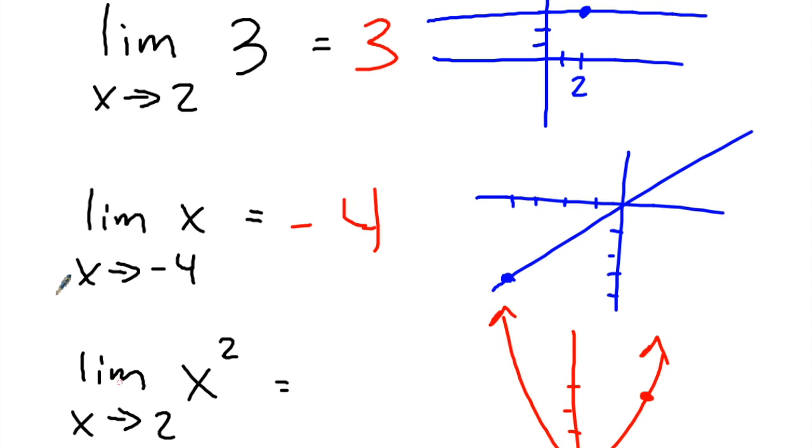Last example, the limit of x squared as x approaches 2. So obviously x squared, nice little quadratic for us. And at 2, you're gonna get a value of 4. And then over on the last slide, it says, of course,